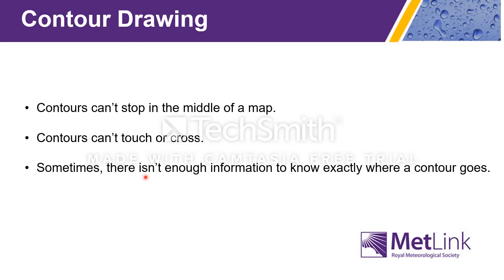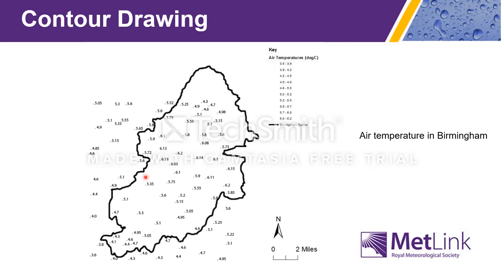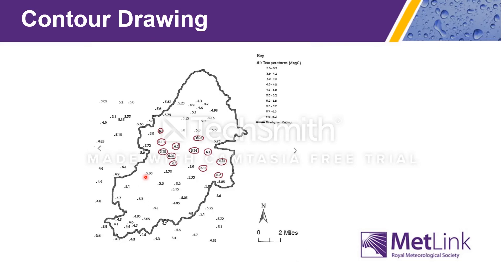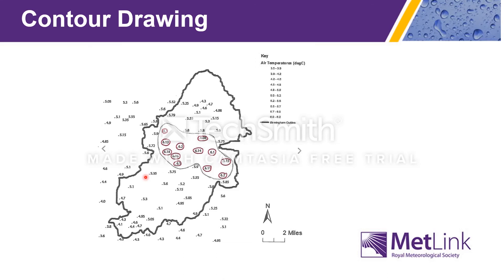Now let's look at a slightly more complicated map. How would you draw the 6 degree contour on this map? One easy way is to colour in all the places where the temperature is over 6 degrees. The 6 degree contour is a line that will separate all the coloured dots from all those that are not coloured. In this case, it's a circle again.